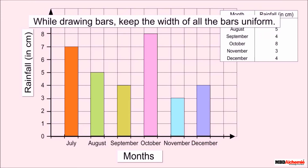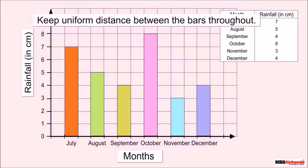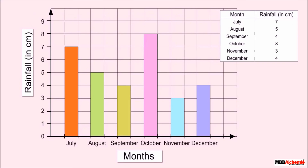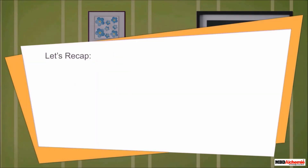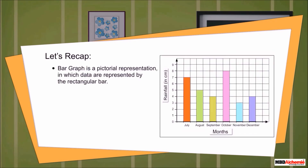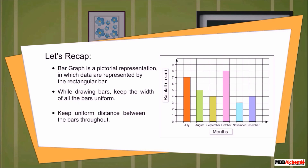While drawing bars, keep the width of all the bars uniform and keep uniform distance between the bars throughout. Thus we obtain a bar graph. Let's recap: a bar graph is a pictorial representation in which data are represented by rectangular bars. Keep the width of all the bars uniform and maintain uniform distance between the bars throughout.